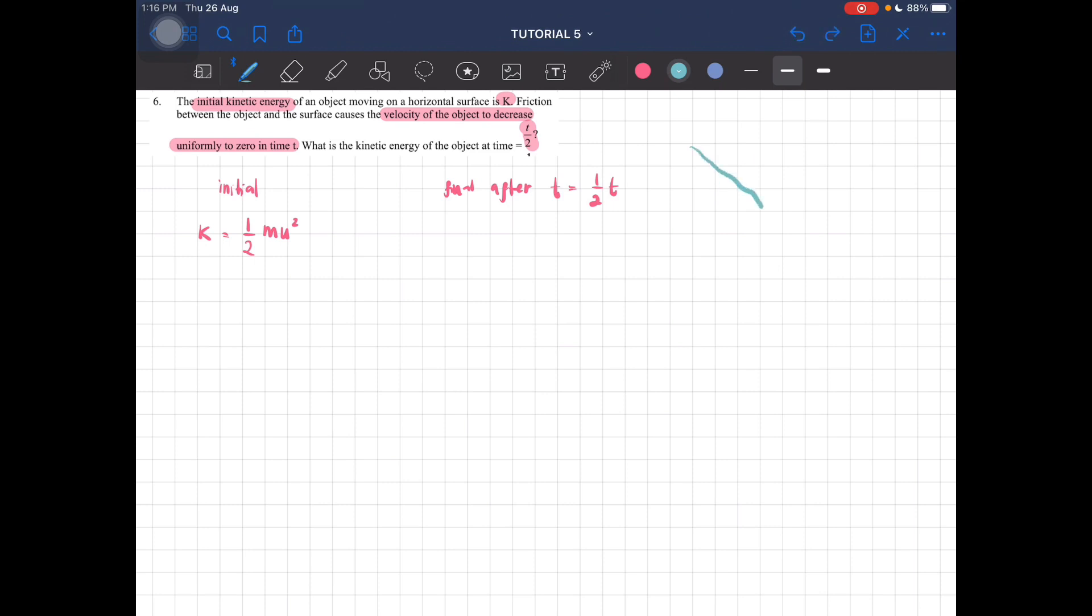Okay, decreases. So it decreases. When the time is half, the value of u will also be half. Sebab dia cakap dia decrease uniformly. So what we can say is, the final velocity is also half of the initial velocity, just like how the time is half to the original lah.